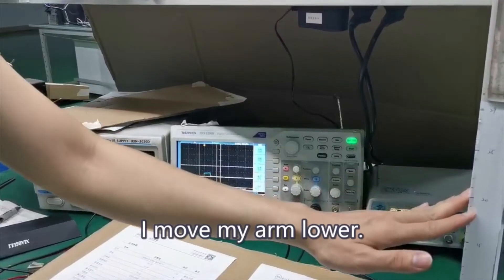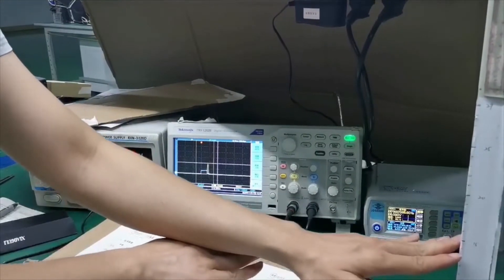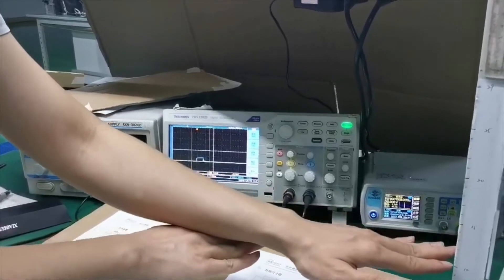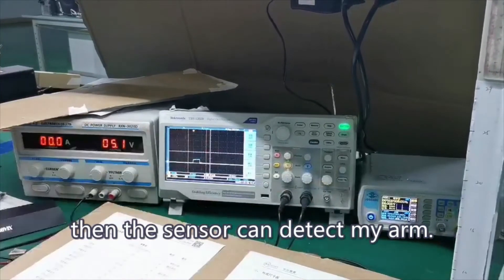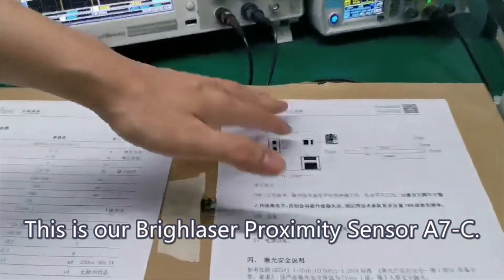Using our skin, I move my arm lower and lower. At about 12 to 15 cm, the sensor can detect my arm. This is our Brightlaser proximity sensor, A7-C.